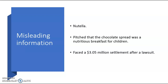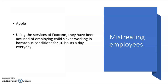The second unethical example is the company Nutella and their misleading information. Basically, Nutella pitched the idea that the chocolate spread they sell was a nutritious breakfast for children. This obviously is not the case, and after a lawsuit in New York, the company will have to face a $3.05 million settlement for the misleading information. This is extremely unethical as Nutella was trying to persuade a new audience of customers with false information regarding their product.